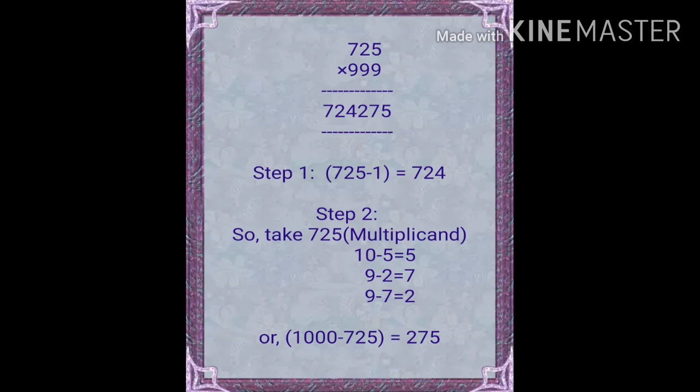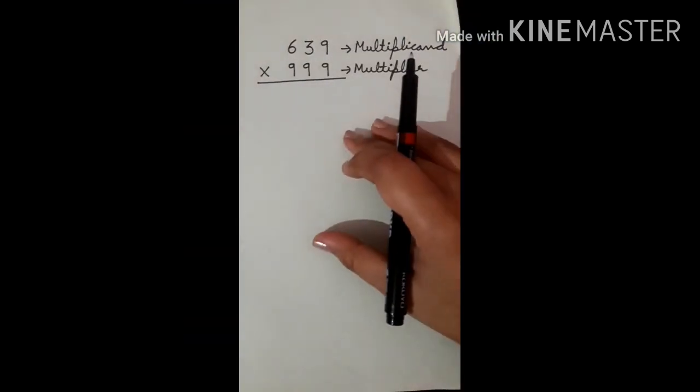Second step, the second trick: all from 9 and last from 10. Take the multiplicand again, 43. Subtract the last from 10 and others from 9. Like 10 minus 3 is 7, and 9 minus 4 is 5. Now our next example: 725 and 999. Step 1, take the multiplicand and minus 1 from it. 725 minus 1 is 724. In step 2, take the multiplicand 725, then subtract the last from 10 and others from 9. Like 10 minus 5 is 5, 9 minus 2 is 7, and 9 minus 7 is 2.